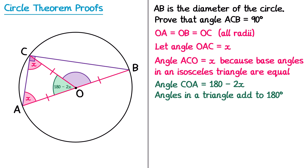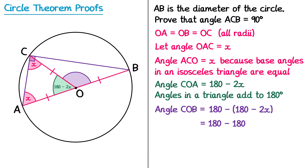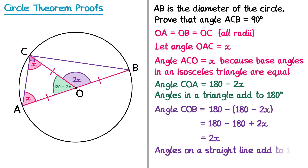Then we're going to find angle COB. This angle forms a straight line with the green angle COA, so those two angles must make 180 degrees. To find angle COB, we start with 180 and subtract the green angle, which was 180 take away 2X — it's really important that you include these brackets. So we get 180 minus (180 minus 2X). Expanding: negative 1 times 180 is negative 180, and negative 1 times negative 2X is positive 2X. The 180s cancel and we're left with 2X. So angle COB equals 2X; the reason is angles on a straight line add to 180 degrees.